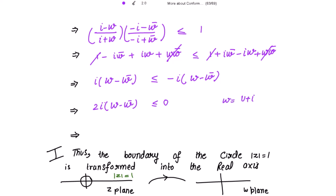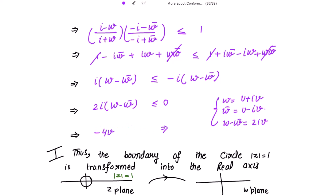If w = u + iv and w̄ = u - iv, then w - w̄ = 2iv. Substituting: 2i · 2iv ≤ 0, which gives 4i²v = -4v ≤ 0. This implies v ≥ 0. So |z| ≤ 1 is transformed into the region v ≥ 0. The boundary |z| = 1 maps to v = 0 (the real axis), and these two things have been shown.